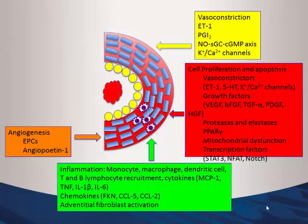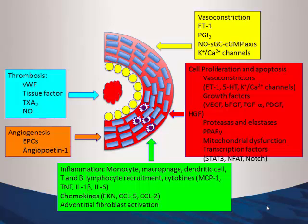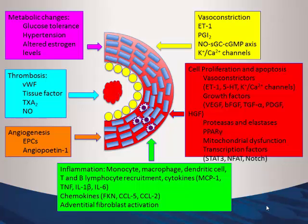Angiogenesis is also relevant — vessels are not just getting constricted, we're seeing endothelial progenitor cells in the circulation trying to replace diseased ones. Anticoagulation is discussed in PH because patients do have some degree of thrombogenic state, particularly in small vessels. A newer approach involves metabolic changes: these patients have altered estrogen levels, hypertension, glucose tolerance issues, and changes in glycolytic pathways discovered more recently.